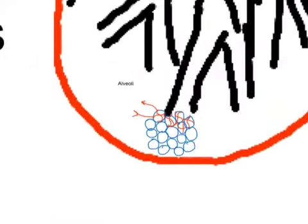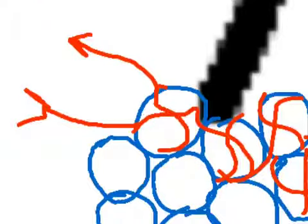Now I'll zoom in slightly further and focus on an individual alveolus. Due to the fact that there are so many alveoli in the lungs, the lungs seem quite small organs, but if you opened up the lungs completely and spread them out as far as they'd go, they actually have a surface area of about 70 metres squared — that's the size of about half a tennis court. So the lungs are impressively sized in terms of surface area.